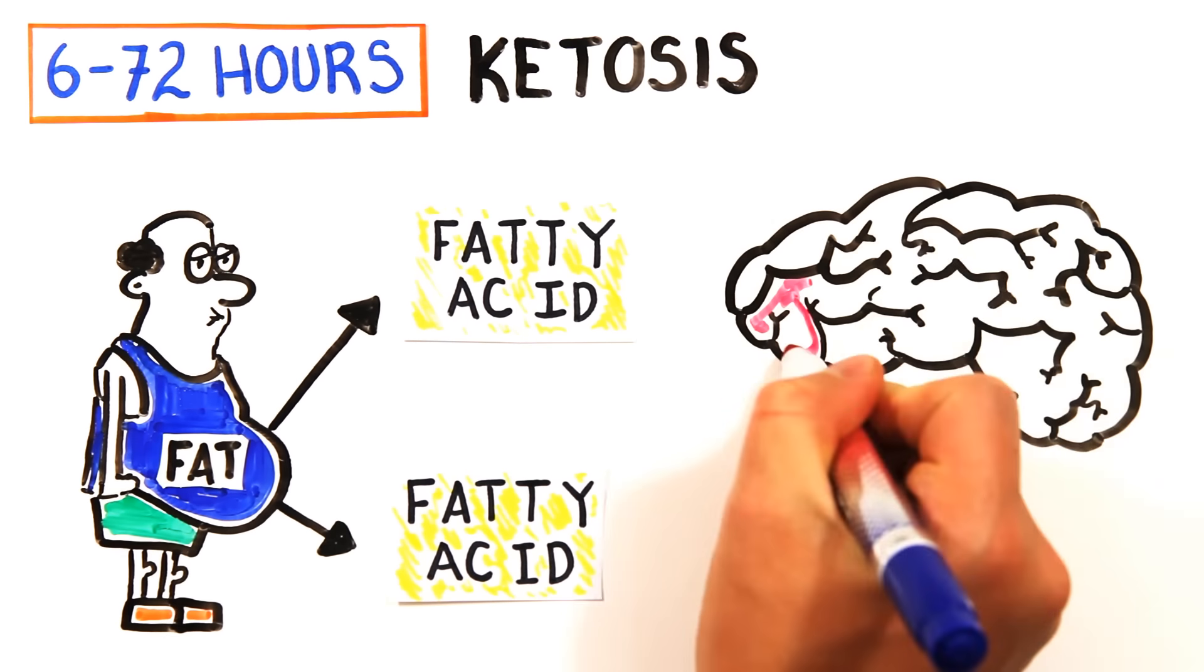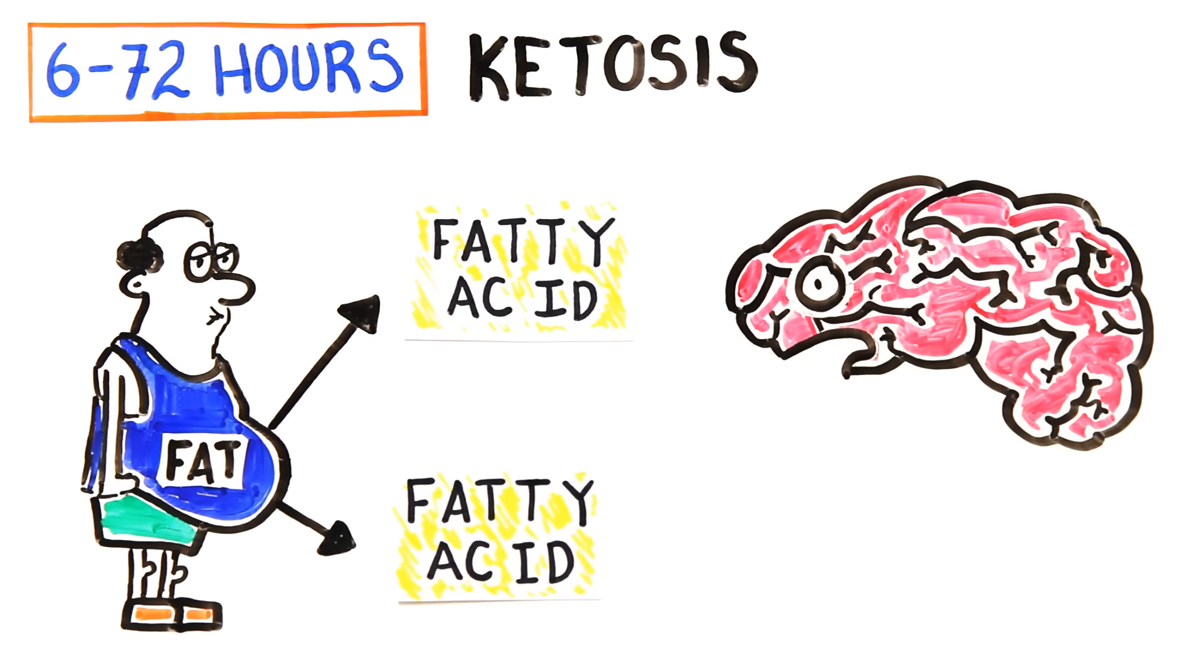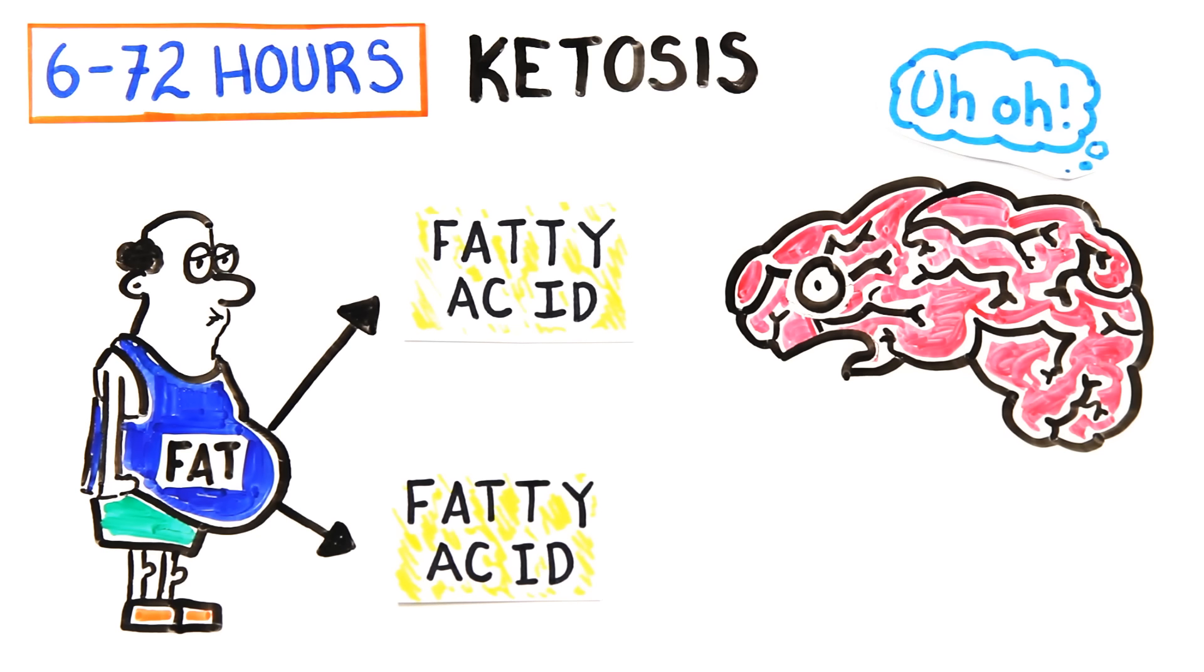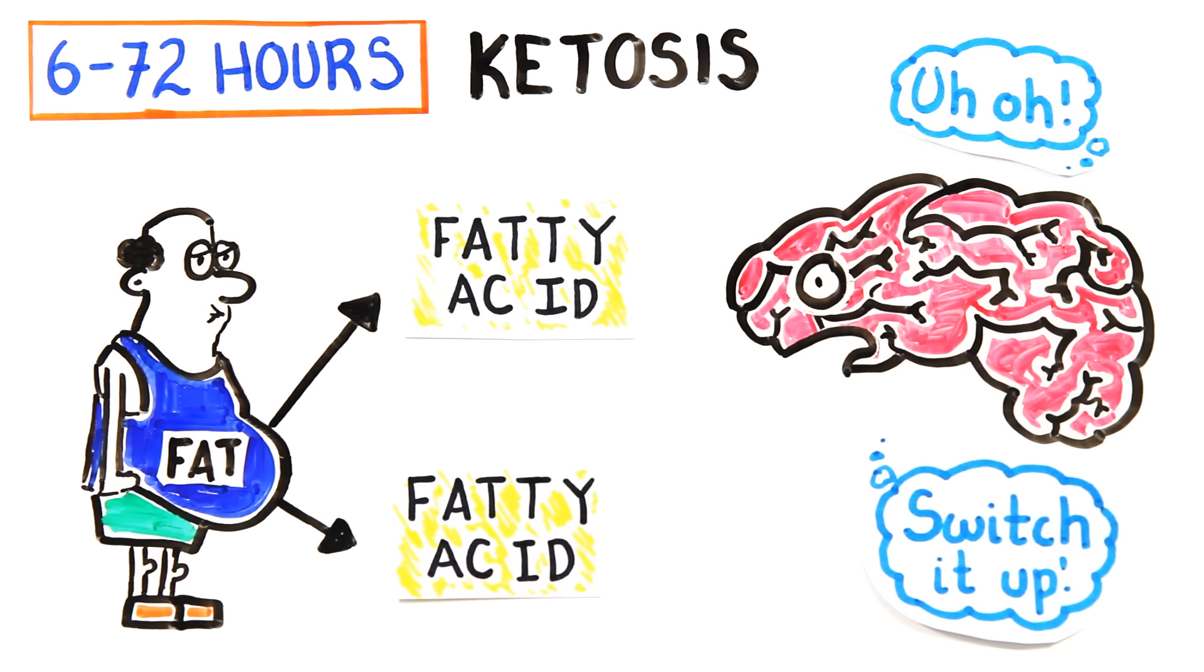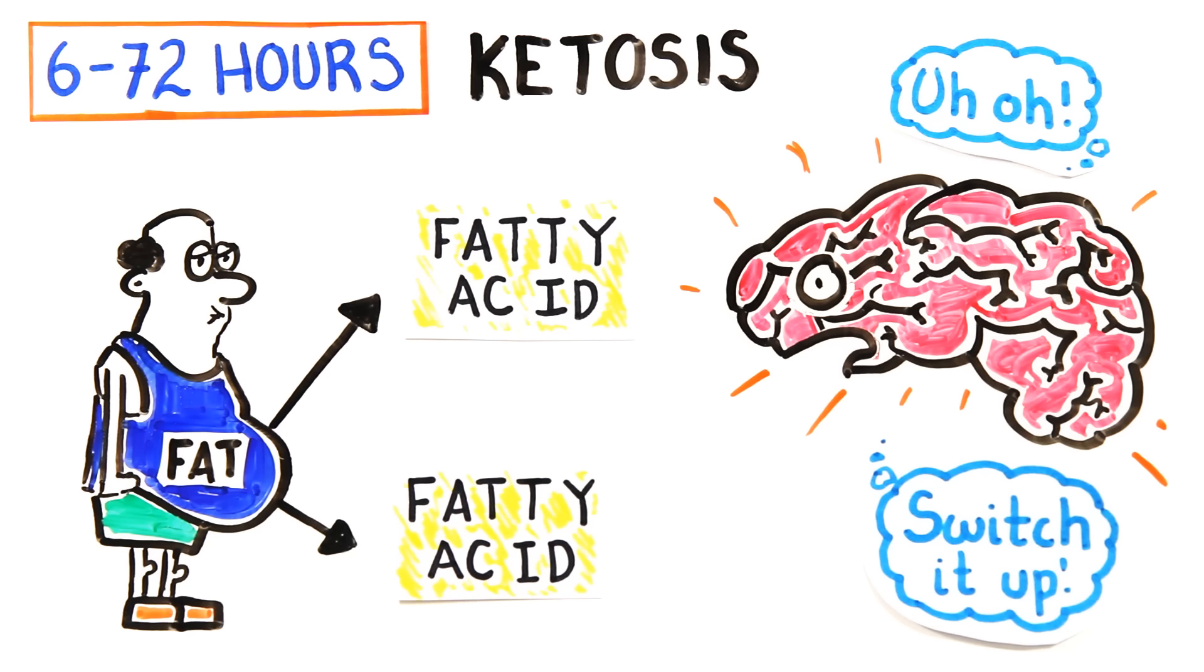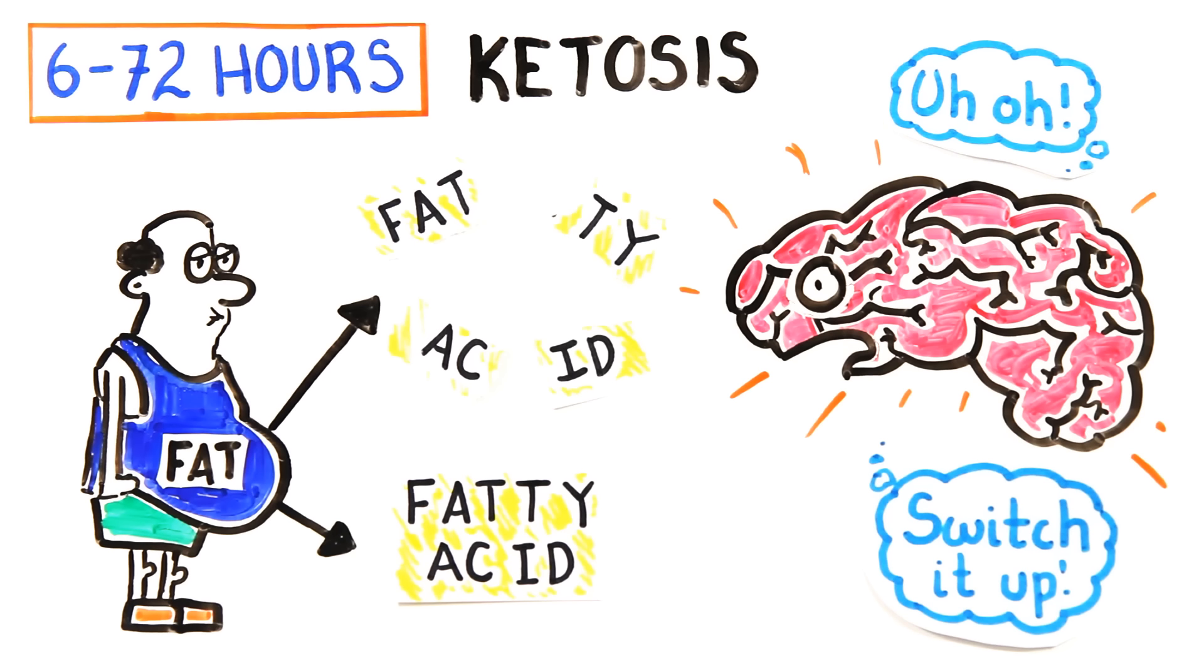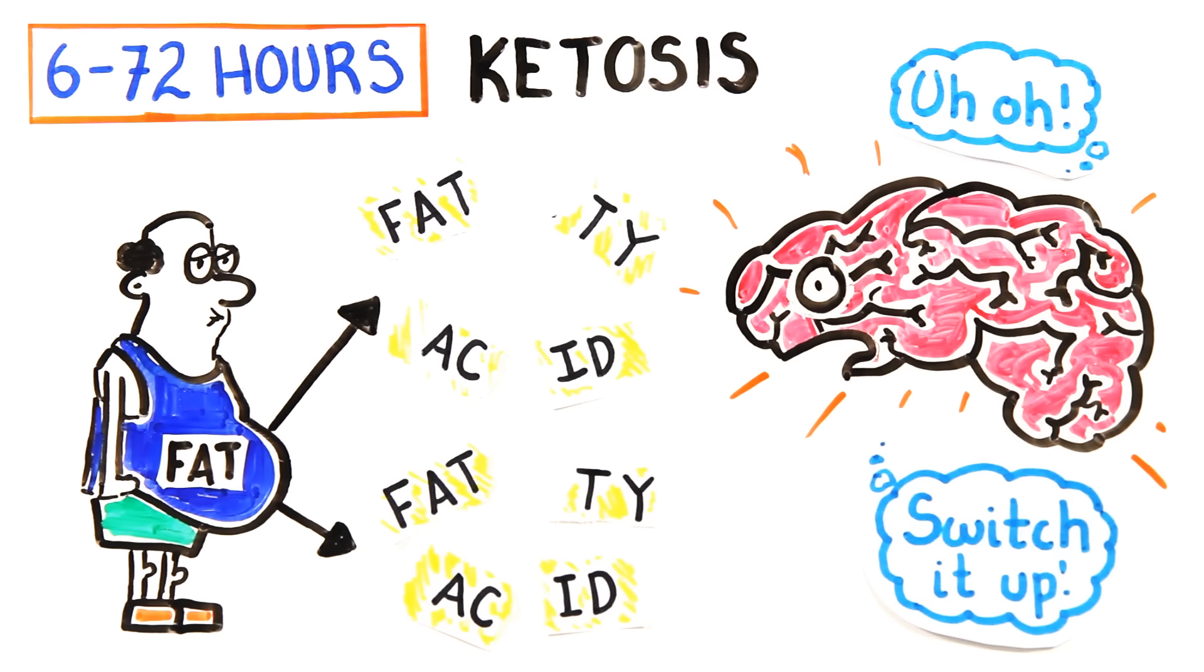However, your brain can't use long chain fatty acids, which is a problem. Because there's no more glucose and the fats are too large to cross the blood-brain barrier, your brain changes modes and begins to use ketone bodies for energy, which are short chain derivatives of fatty acids.